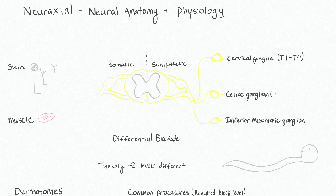The celiac ganglion will enter nerve roots T5 to T12, and your inferior mesenteric ganglion will enter at nerve roots L1 to L3. So by blocking different nerve root levels, you'll see sympathetic effects in the distribution of any of these particular sympathetic ganglia.